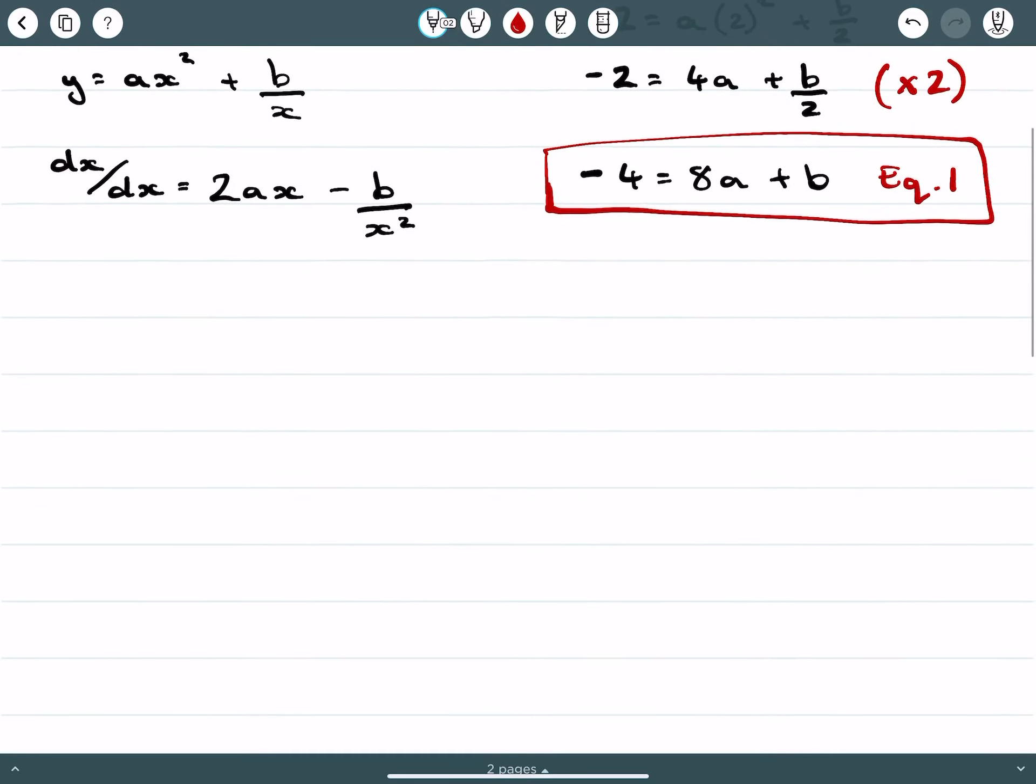The other aspect is when x equals 2, dy/dx equals negative 5. So negative 5 equals 2a times 2 minus b on 2 squared, which equals 4a minus b on 4.